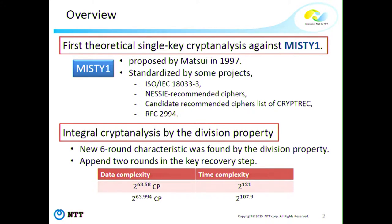First, I create a new six-round integral characteristic using the division property. The full-round of Misty-1 is eight rounds, so by appending two rounds in the key recovery step, I can reach the full-round. As a result, data complexity is 2^63.58 chosen plaintext, and time complexity is 2^121. A second attack is a time complexity optimization, but unfortunately this attack was already improved by a tier-balance in the LAMP session last day. In this talk, I only focus on the improvement of the integral characteristic.